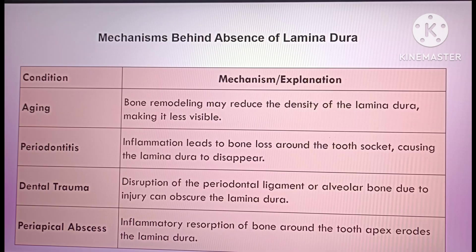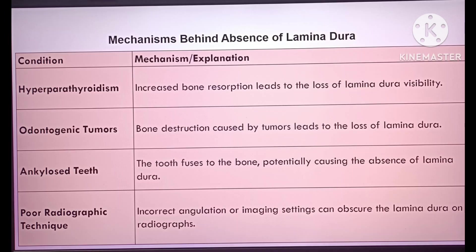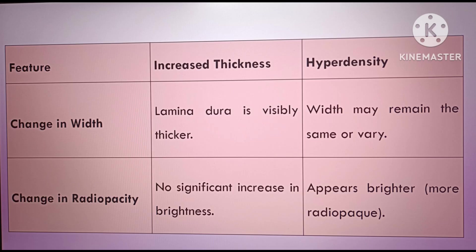Absence of the lamina dura indicates significant bone alteration, often requiring further investigation. It is important to distinguish between increased thickness and hyperdensity of the lamina dura, as they appear similar but differ: increased thickness refers to a wider lamina dura, while hyperdensity indicates increased radio-opacity without necessarily altering the width. Hyperdensity appears brighter on radiographs, whereas increased thickness shows normal radio-opacity.